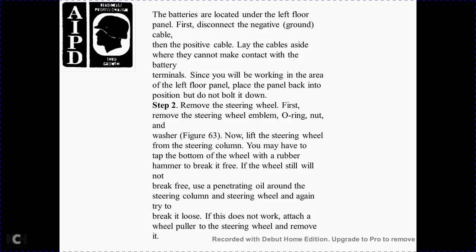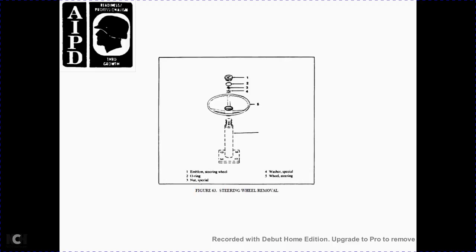The batteries are located under the left corner of the panel. First, disconnect the negative ground cable and lay the cables aside so they cannot make contact with the battery terminals. Step 2: Remove the steering wheel. Remove the steering wheel assembly with the O-ring, nut, and washer as shown in Figure 63. If the steering wheel will not break free, tap the bolt with the wheel with a rubber hammer to break it free. If the wheel still will not break free, apply penetrating oil to the steering column and steering wheel joint, then try again to break it loose. If that does not work, attach a wheel puller and remove the steering wheel.